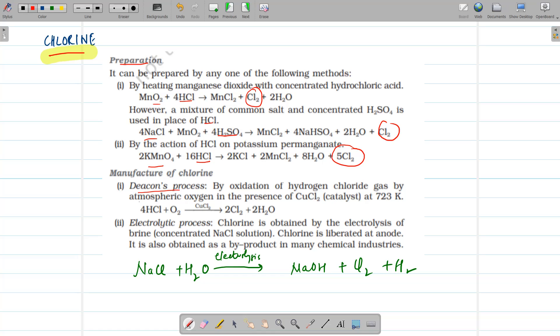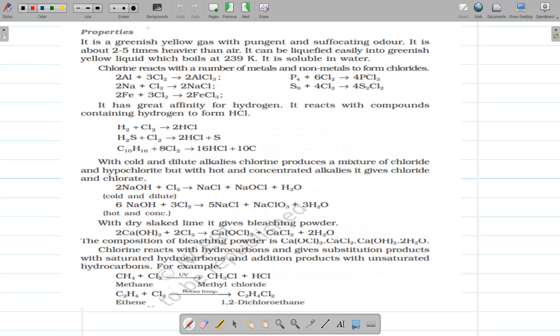Then, it can be manufactured by Deacon process. This is by the oxidation of the hydrogen chloride gas in presence of catalysts such as copper chloride. Then, we get chlorine. It can also be prepared by passing electricity through brine solution. That is, concentrated NaCl solution. So when we pass electricity, we will get chlorine which will be liberated at anode.